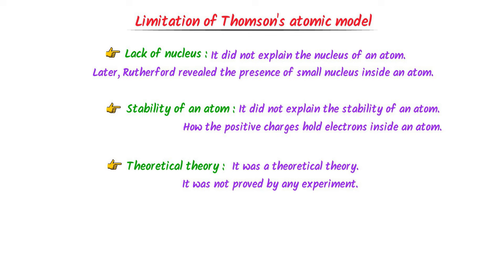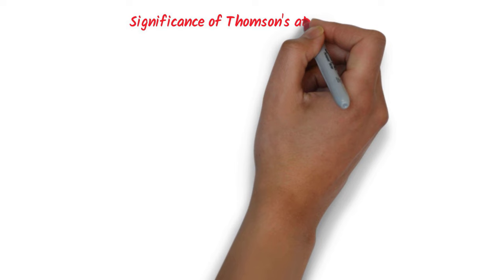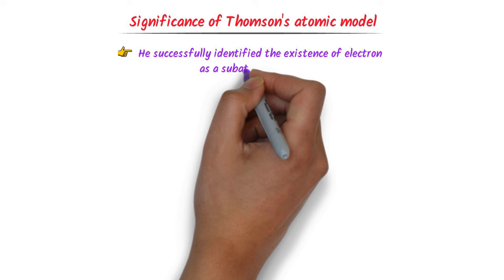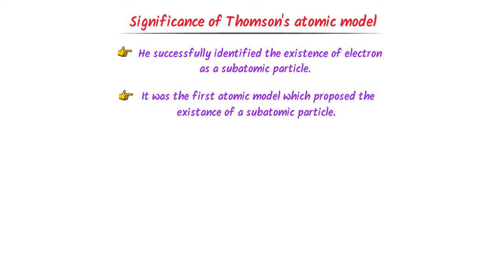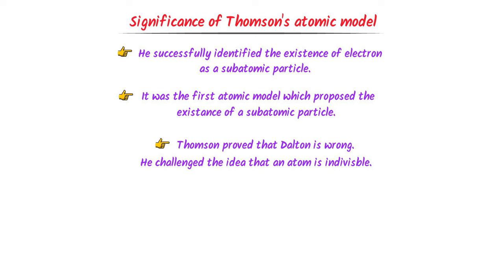Finally, what are the significance of Thomson's atomic model? The first significance was that he successfully identified the existence of the electron as a subatomic particle. Secondly, it was the first atomic model to propose the existence of subatomic particles. Thirdly, Thomson proved Dalton wrong and challenged the idea that atoms were indivisible. I hope that you have learned all about Thomson's atomic model.